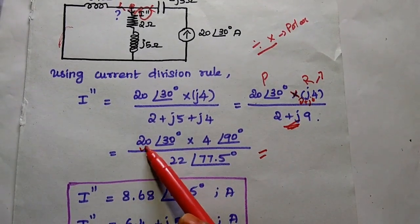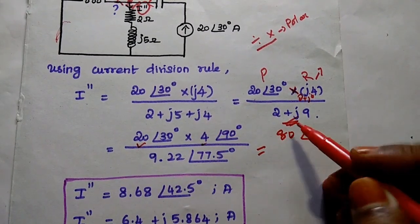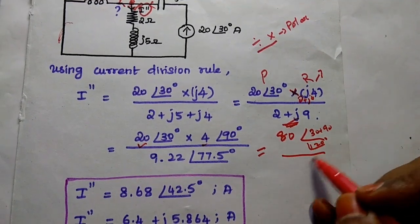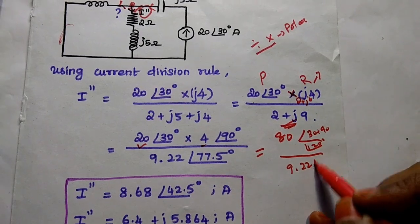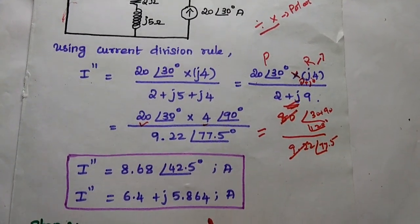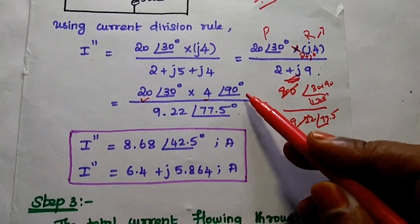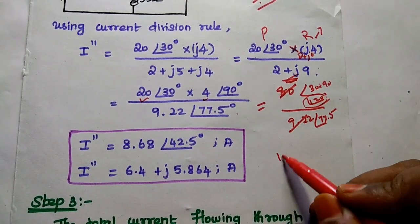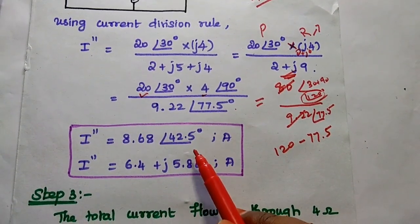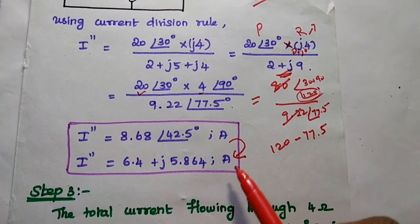We multiply 20 and 4 to get 80, and add the angles: 30° plus 90° equals 120°. The denominator is 9.22∠77.5° (already obtained in the previous step). Dividing: 80 divided by 9.22 gives 8.68, and subtracting the phases: 120° minus 77.5° gives 42.5°. So I'' = 8.68∠42.5°. We then convert this polar form into rectangular form using the calculator by pressing Shift and the minus sign.